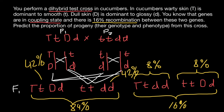The phenotypes are as follows: capital T is present, so warty skin; capital D is present, so dull skin — giving warty and dull at 42%. Then smooth and glossy at 42%, warty and glossy at 8%, and smooth and dull at 8%. So we have given all genotypes, discussed phenotypes, and assigned frequencies. This is all for today — subscribe and see you in the next video. Goodbye.